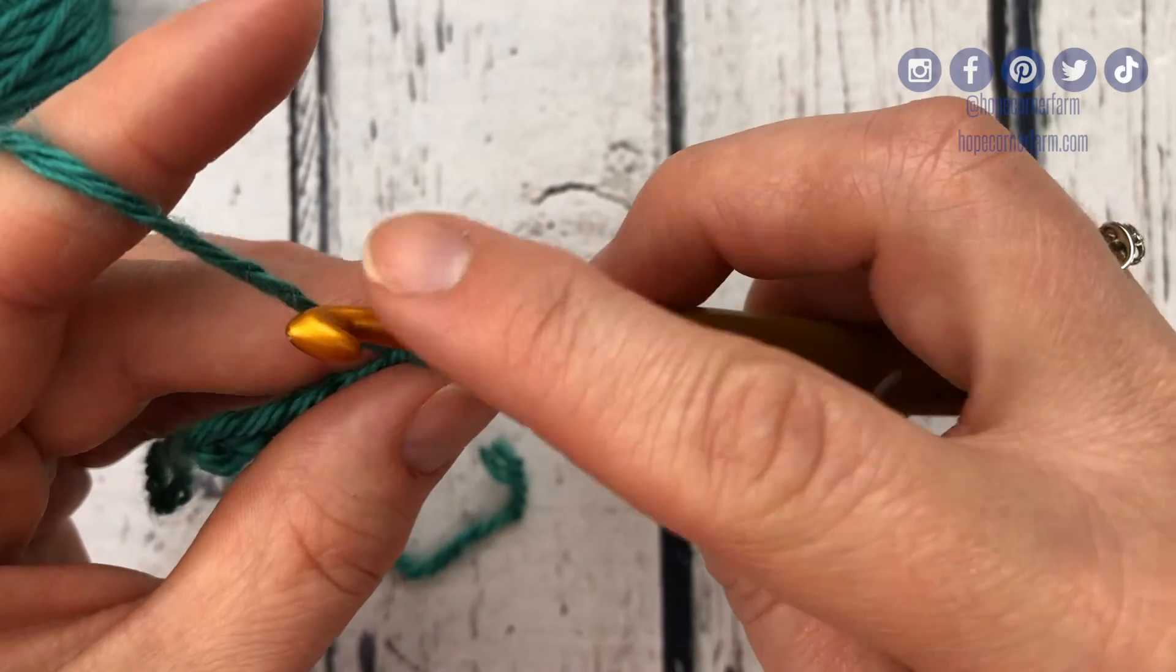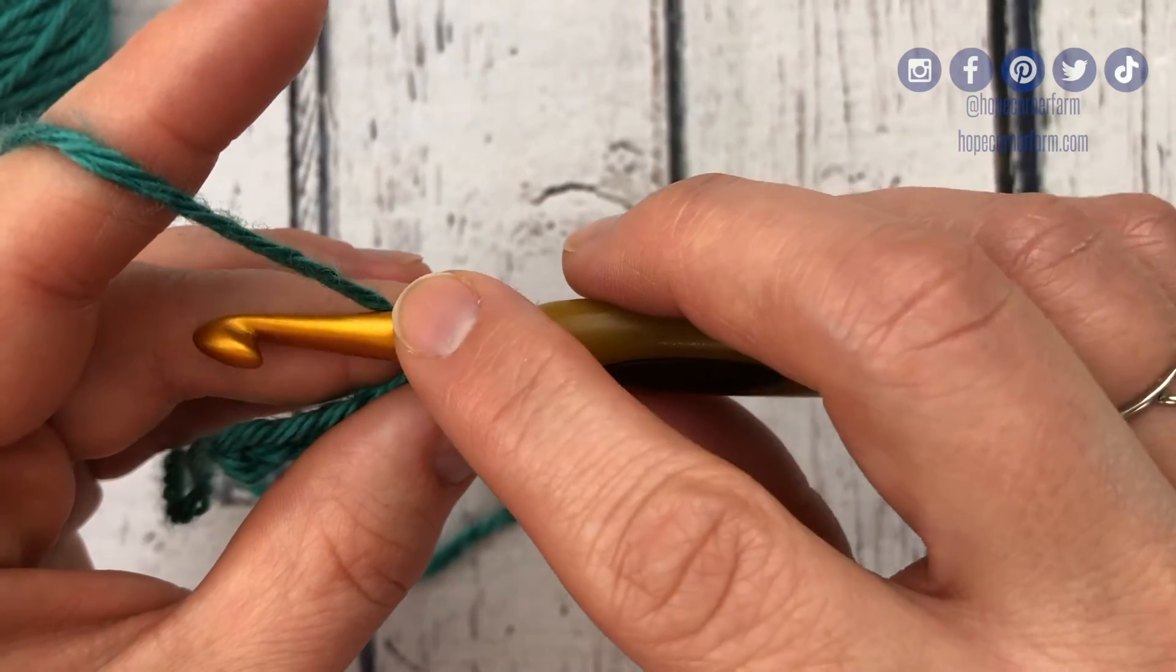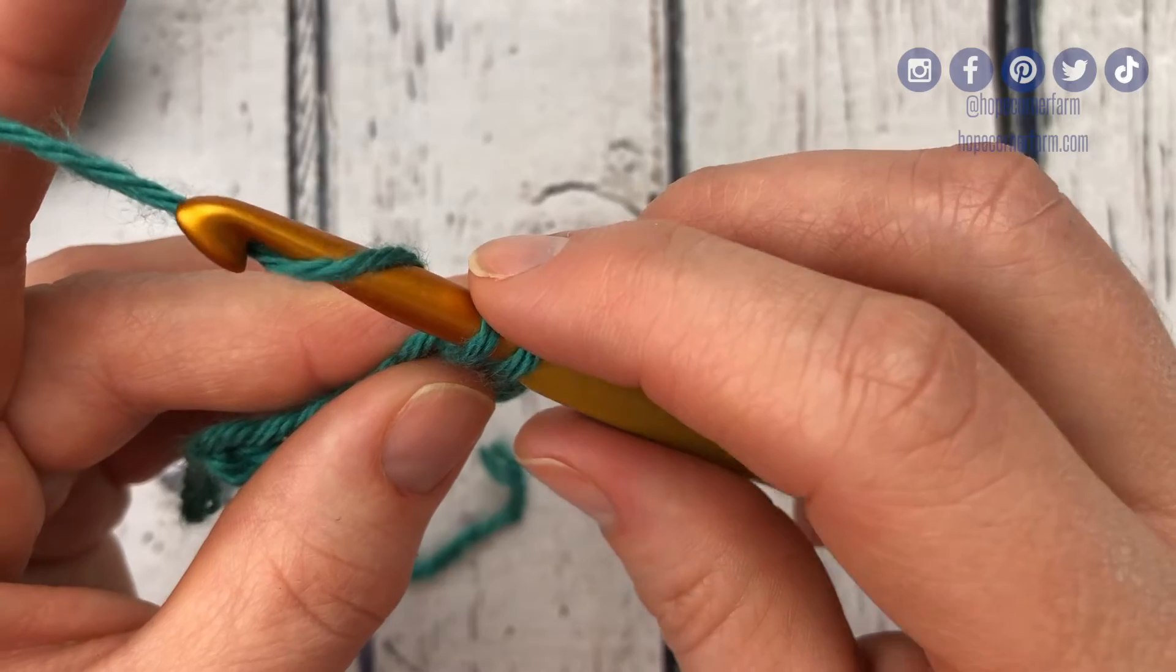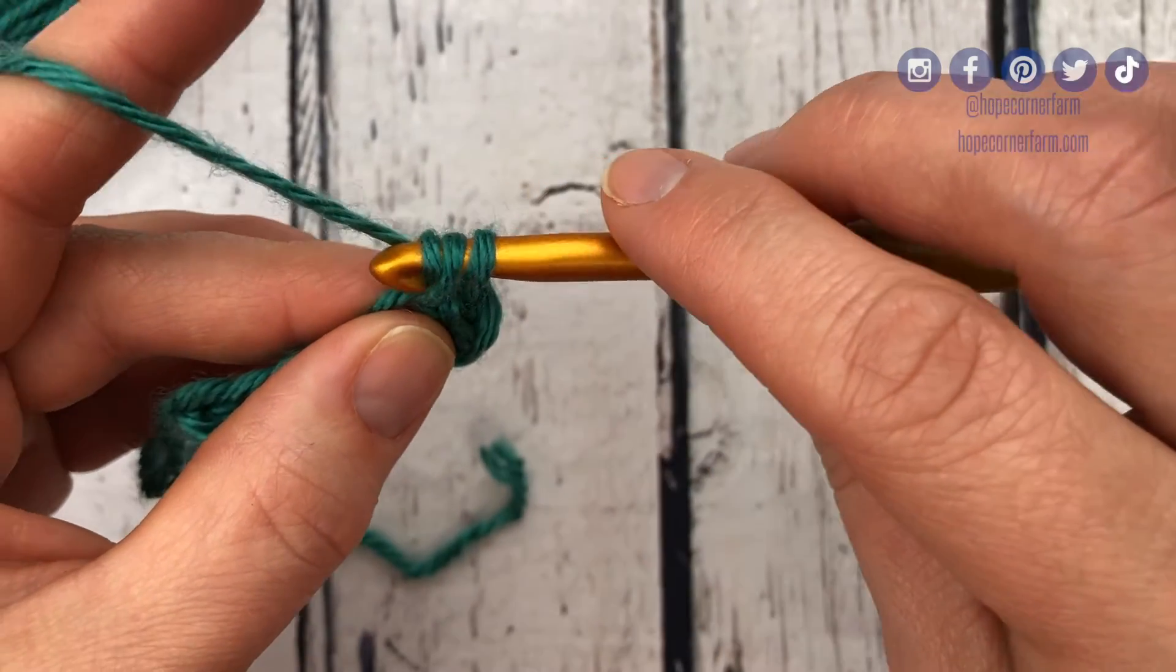Now when I go to yarn over for the second one, it is a back, up, rotate my hook down, and then pull through these two loops.